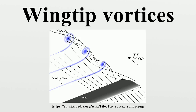Migratory birds take advantage of each other's wingtip vortices by flying in a V formation so that all but the leader are flying in the upwash from the wing of the bird ahead. This upwash makes it easier for the bird to support its own weight, reducing fatigue on migration flights.